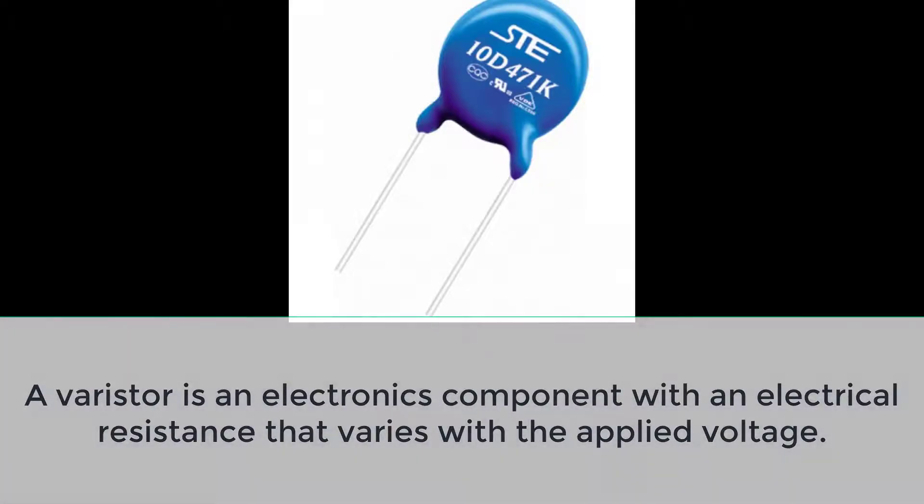First of all, going with the definition of varistor, a varistor is an electronics component with an electrical resistance that varies with an applied voltage.